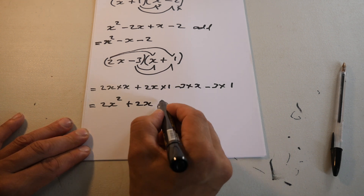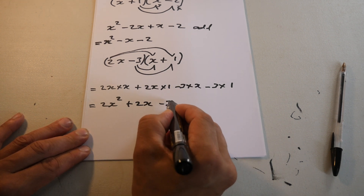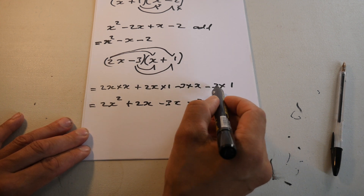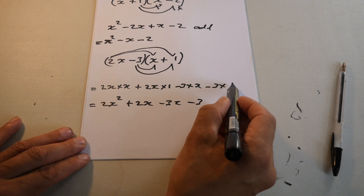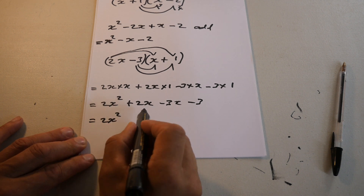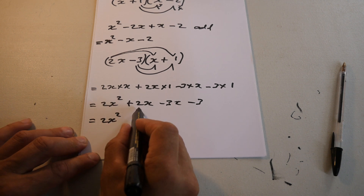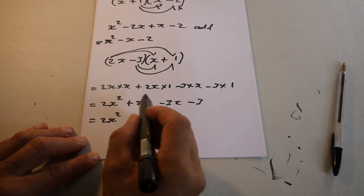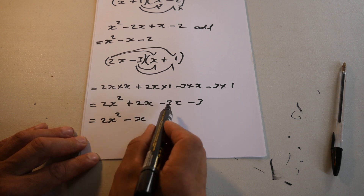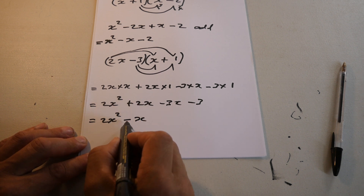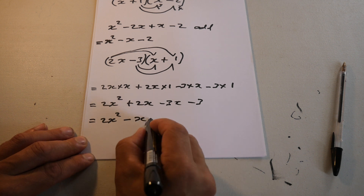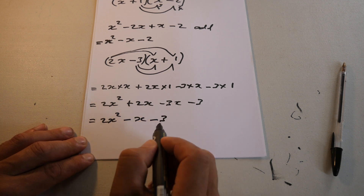Minus 3 times x is minus 3x, minus 3. Remember, minus times plus is minus. So it equals 2x squared — there's 2 of them minus 3 of them, that's minus 1 of them. That's 2 minus 3 is minus 1, so 2x minus 3x is minus 1x, minus 3.